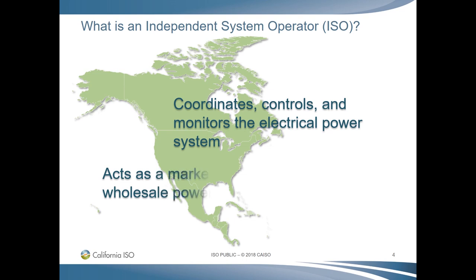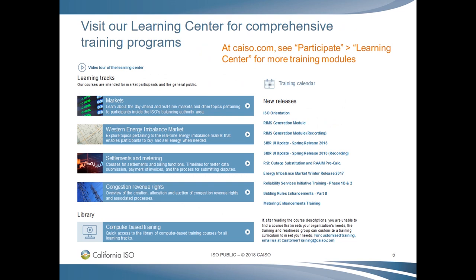An ISO operates differently from public utilities in a few key ways. We operate the high-voltage transmission system that connects power plants to substations, but not the low-voltage distribution lines that connect substations to homes and businesses. The distribution lines are operated by the utilities. The ISO does not own any transmission or generation assets. We are profit-neutral and independent, and we do not serve retail consumers.